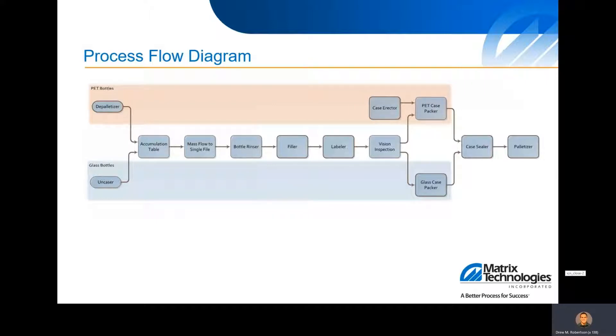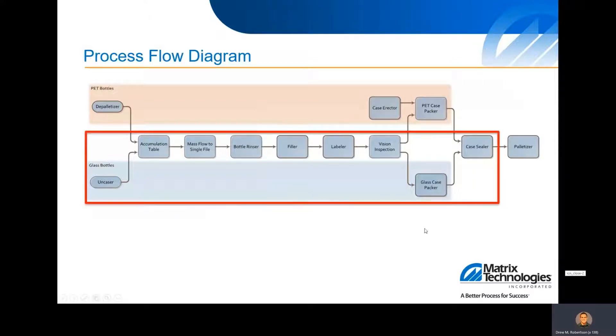So for this line, this is just an overview of the equipment that's there. The line can run either plastic bottles or glass bottles. For this case, we are looking at the glass bottles up into the case sealer. The palletizer is far enough downstream, it's not affecting our OEE.